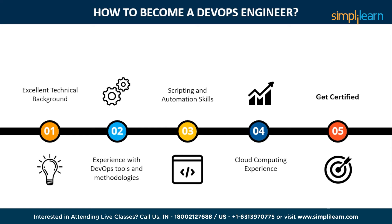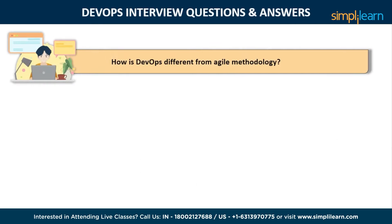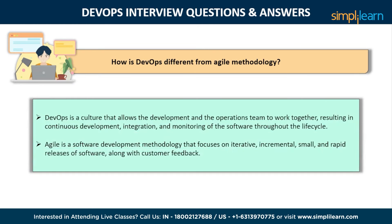Let us begin with some really important DevOps interview questions and answers. The first question is: how is DevOps different from Agile methodology? DevOps is a culture that allows the development and operations team to work together, resulting in continuous development, testing, integration, deployment, and monitoring of software throughout the lifecycle. Whereas Agile is a software development methodology that focuses on iterative, incremental, small, and rapid release of software, along with customer feedback. Agile addresses gaps and conflicts between the customer and developers, while DevOps addresses gaps and conflicts between the developers and IT operations.